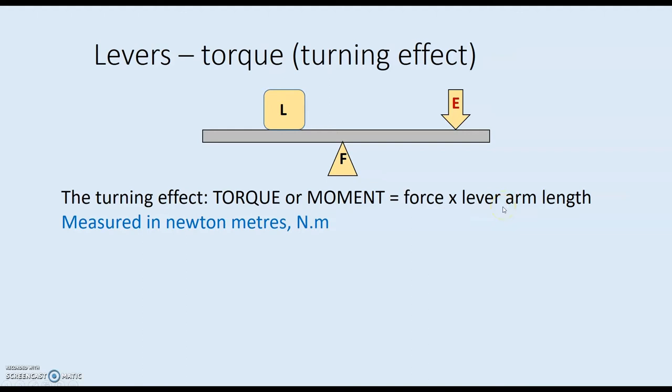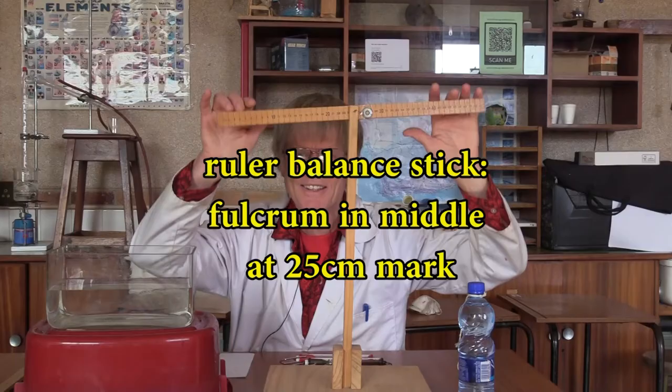Consider a load on a balanced stick. The load is this distance from the fulcrum, we would call that the load arm. And the effort is applied further from the fulcrum and the distance from the fulcrum to the effort is called the effort arm.